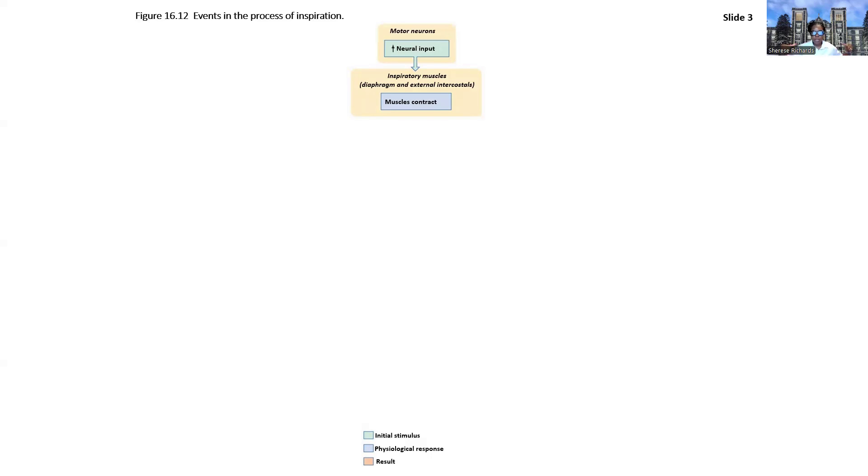So external pulls them up and out, internal pulls them down and in. But specifically here, we're thinking about inspiration. So the diaphragm, which flattens down, and the external intercostals, which increases the shape of the cavity. So those things happen. Then the chest wall expands.